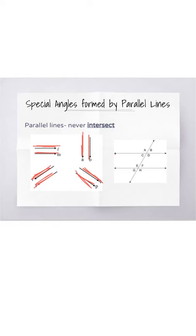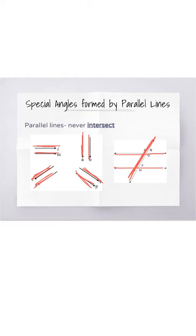If you look at this diagram where we have parallel lines that are horizontal, there is a transversal line that goes through it and we'll talk about that later. But the important thing to know is that the parallel lines, when you look at these three lines, are the two that never ever intersect.